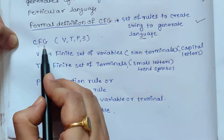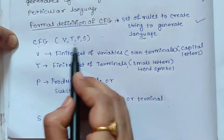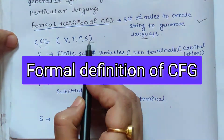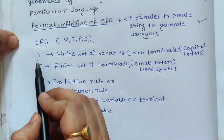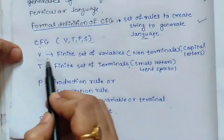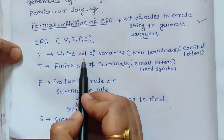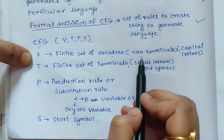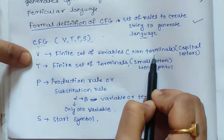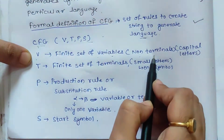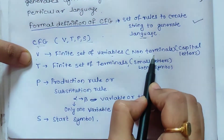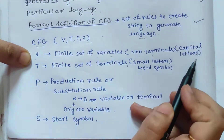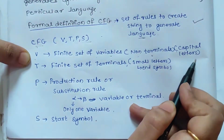This context free grammar consists of four tuples: V, T, P, and S. Here V stands for a finite set of variables, also called non-terminals, and these non-terminals are always represented with the help of capital letters.